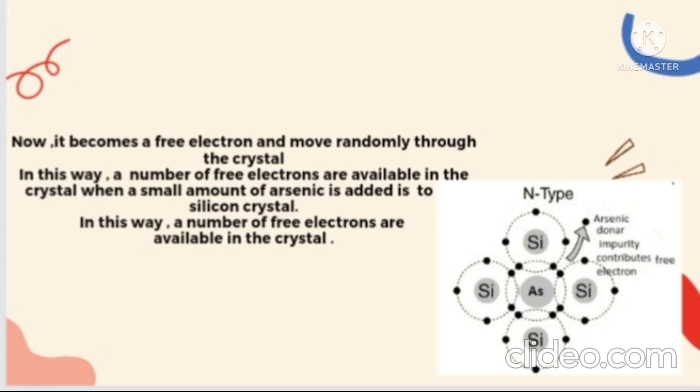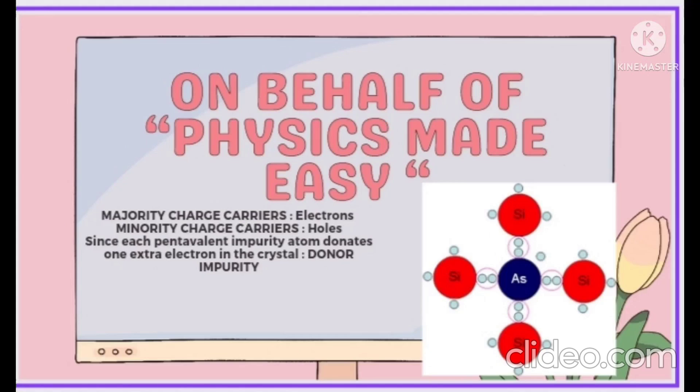In this type of semiconductor, there is a large number of free electrons. Majority charge carriers in this type of semiconductor are electrons and the minority charge carriers are holes, which are thermally generated. Thus, this type of semiconductor is called the N-type semiconductor, and this is one type of the extrinsic semiconductors. Since each pentavalent impurity atom donates one extra electron to the crystal, it is known as donor impurity.